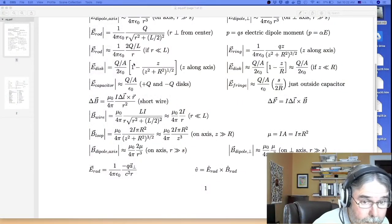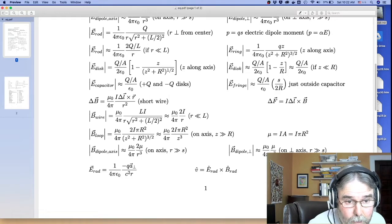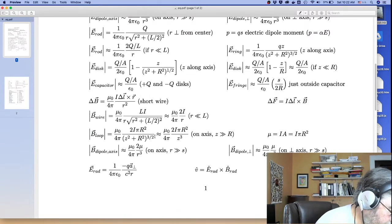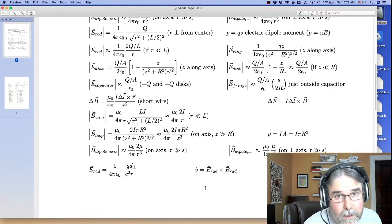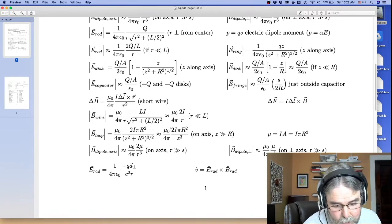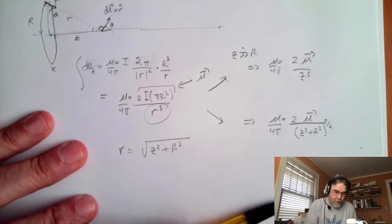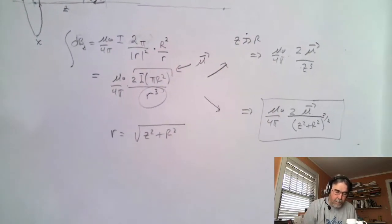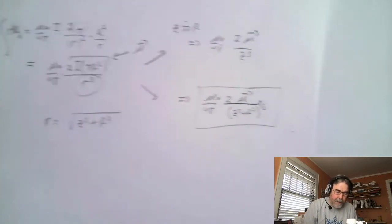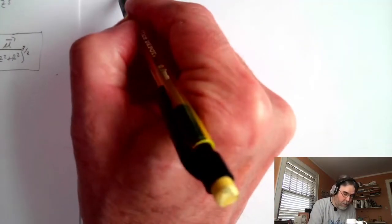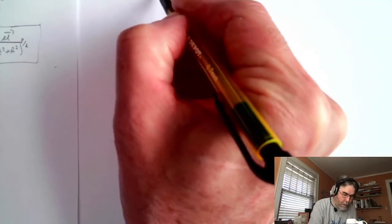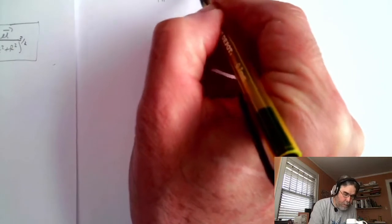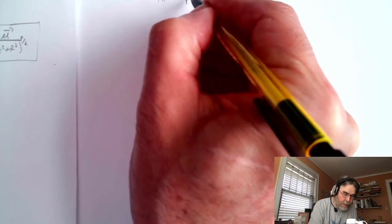That is the magnetic field due to a loop — I just wanted to remind you where it comes from. This is relevant because in this week's laboratory we're going to be using a set of coils very much like this. Let's use this general result to analyze the coils for this week. So B_z is mu_0 over 4π times twice the dipole moment of the loop divided by r cubed, where r is the hypotenuse of that triangle.